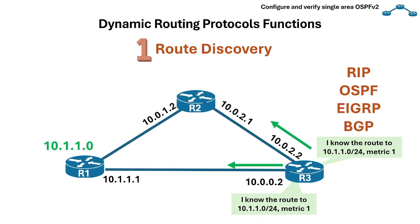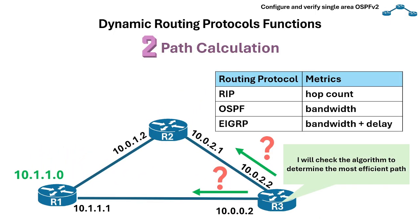The first function is Route Discovery. Routers use routing protocols to learn about available networks and their paths from neighboring routers. Next is Path Calculation. Protocols employ algorithms to determine the most efficient path to each destination network, often based on metrics like distance, bandwidth, or delay.